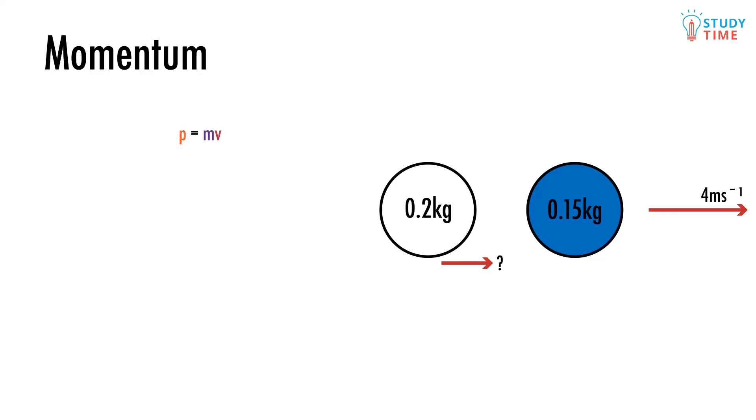We use that conservation of momentum equation to make the total momentum before and after the collision equal to each other. What is the total initial momentum of both balls going to be? Since the blue ball isn't moving, we can ignore it because it won't have any momentum. So all we're looking at is the white ball.